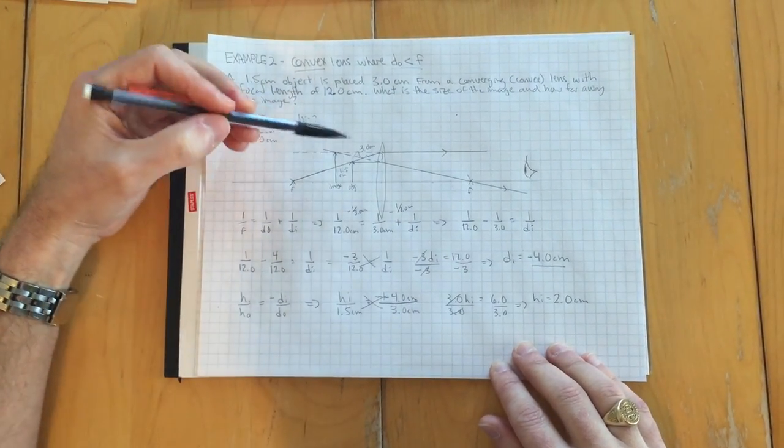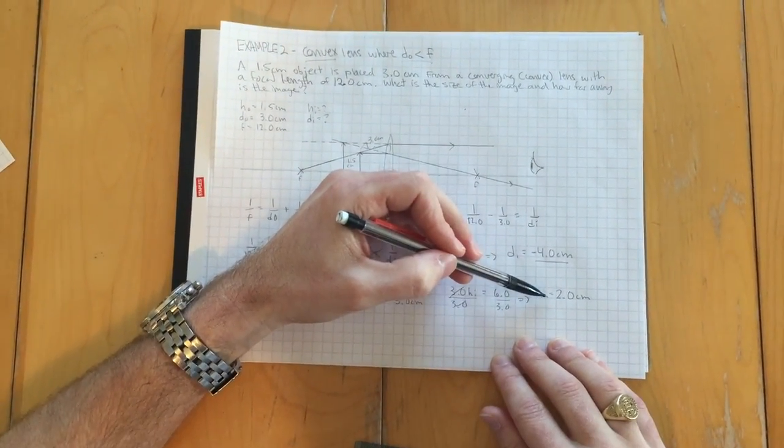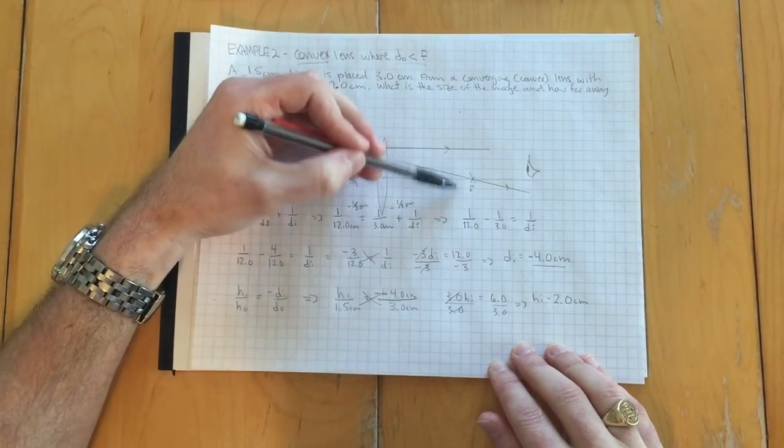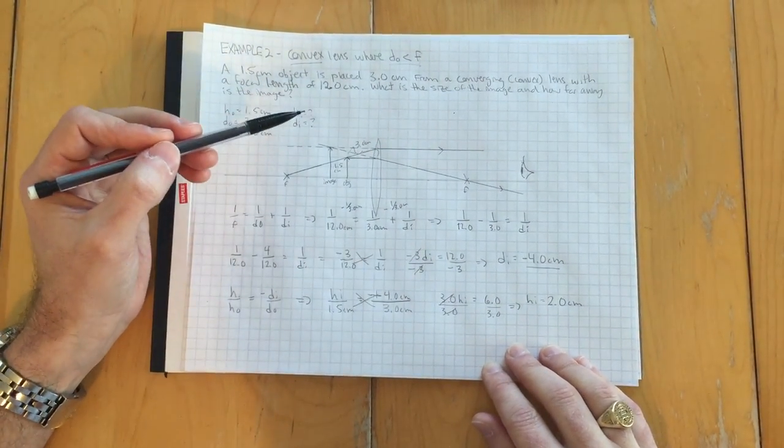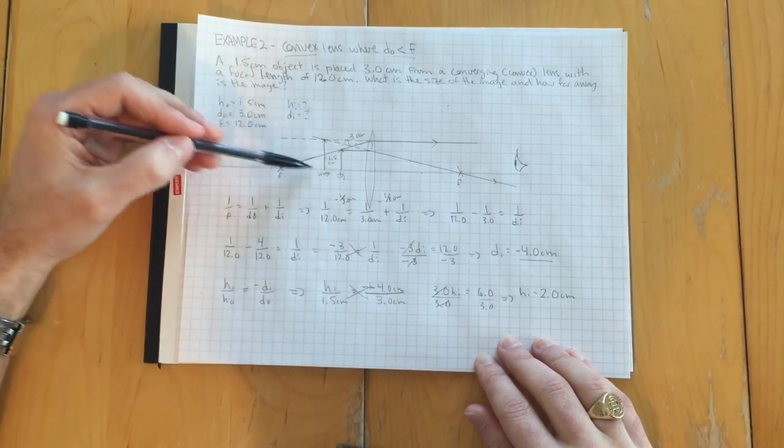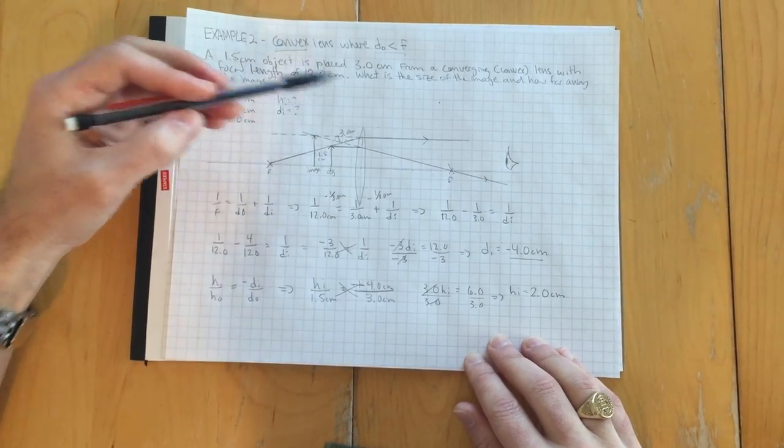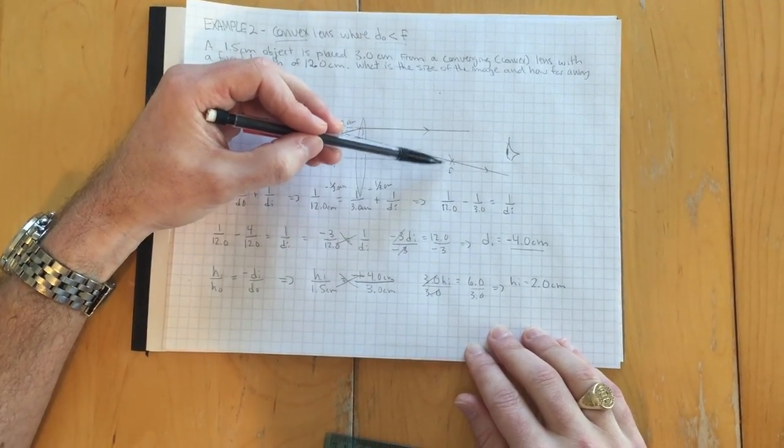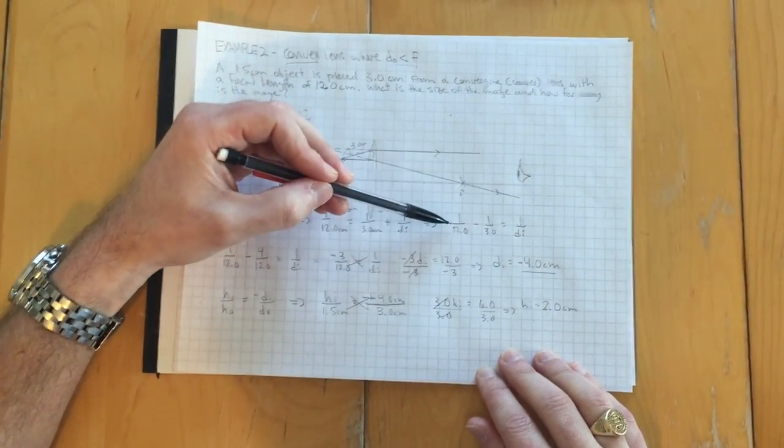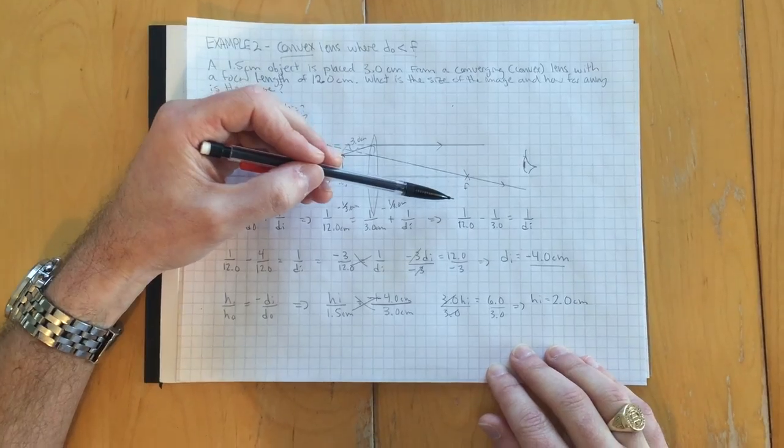Again, just like a magnifying glass would do. So positive image height here means that it's right side up as opposed to upside down like it was in the first one. Images that appear on this side of the lens, same size as the object are called virtual images and they will be right side up. I didn't mention this in the first video, but an inverted image is called a real image because you can actually project that on a screen, like at the movie theater or something like that.